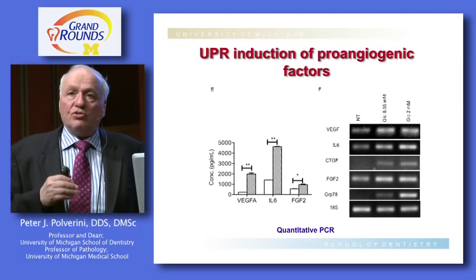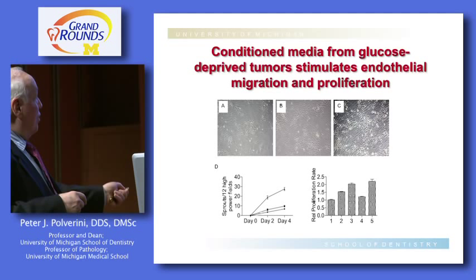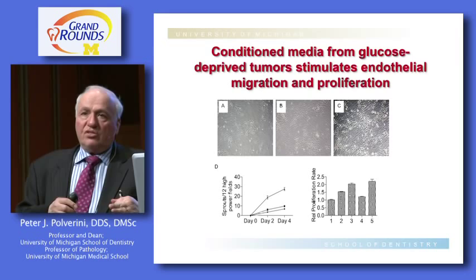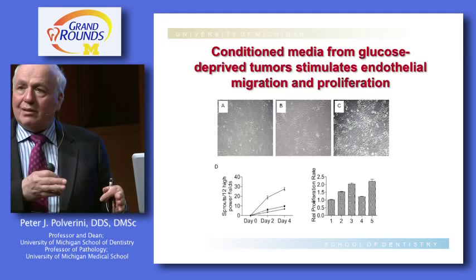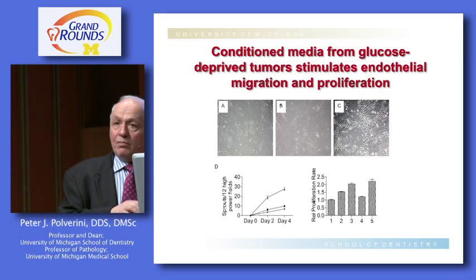Conditioned media from glucose-deprived tumor cells is more potently capable of stimulating blood vessel growth. Not only do we link resistance to the unfolded protein response — using acidic conditioned media — but we now know that activation of the unfolded protein response produces a concomitant increase in stimulators of blood vessel growth and a downregulation of inhibitors. This makes sense if the response is playing an active role in maintaining tumor growth.